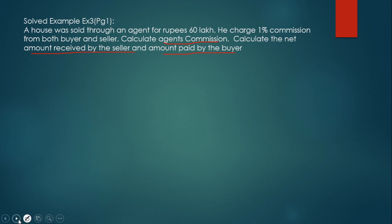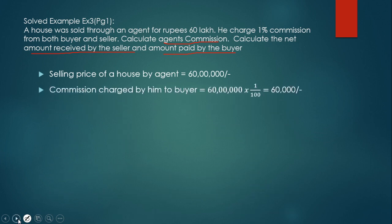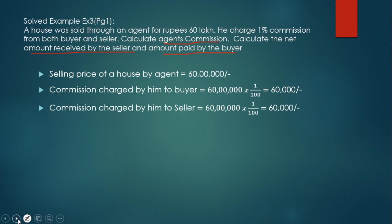We note down the information: selling price of the house = 60 lakhs. Commission rate = 1%. Commission charged from buyer = 60 lakhs × 1/100 = 60,000. Commission charged from seller = 60 lakhs × 1% = 60,000.